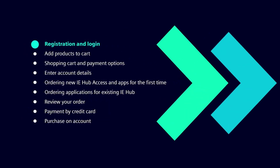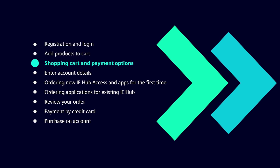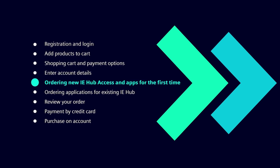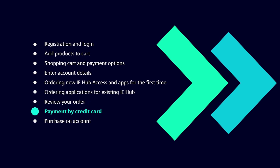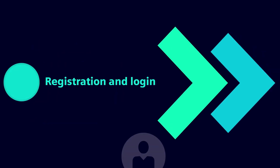Here is an overview of the ordering process: registration and login, add products to shopping cart, shopping cart and payment options, enter account details, ordering new IE Hub access and apps for the first time, ordering applications for an existing IE Hub, review your order, payment by credit card, and purchase on account.